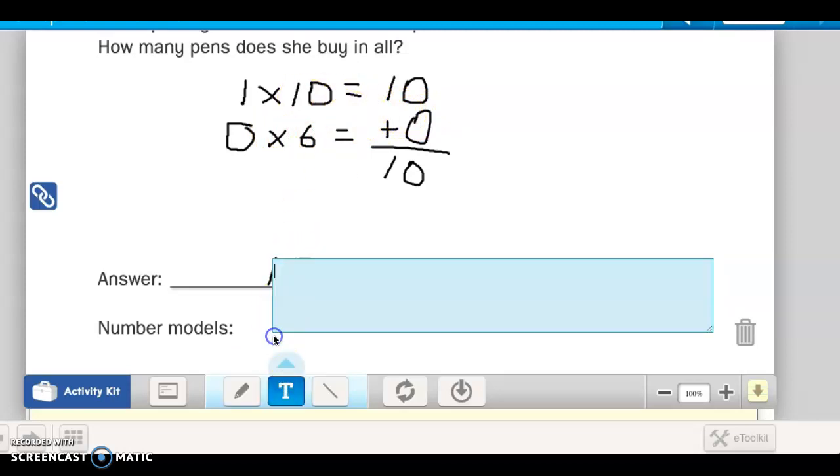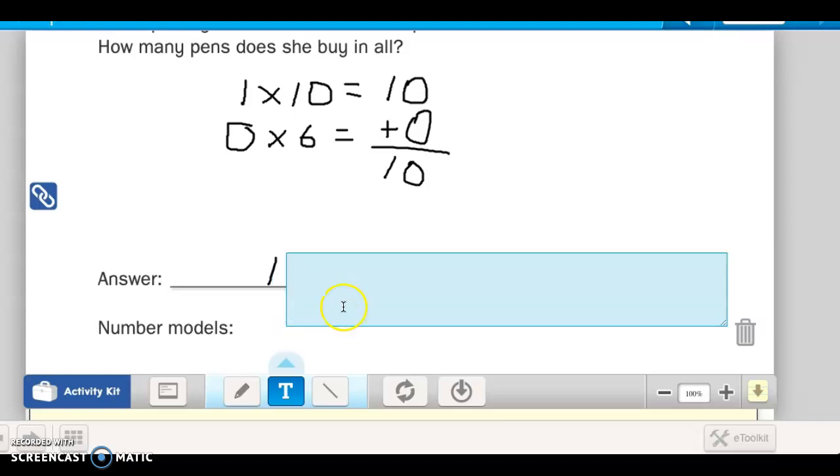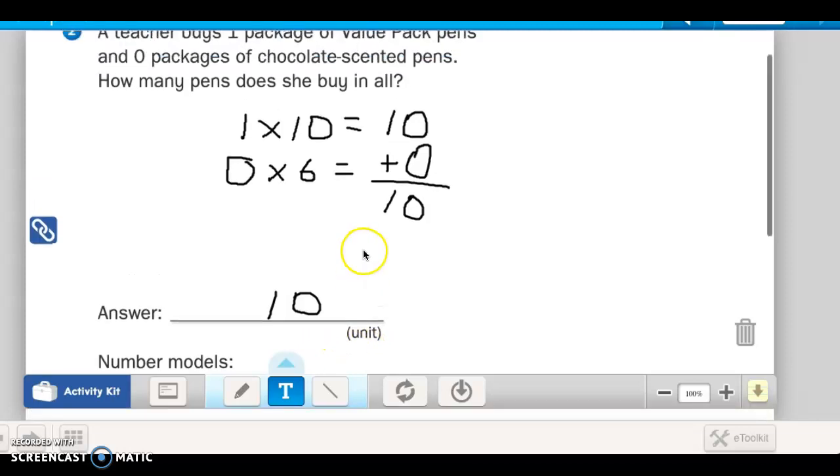So you should be writing those down here. So you would type in here at the bottom. You're going to write one times ten equals ten, zero times six equals zero, and then add ten plus zero equals ten. And how many pens? Ten, for ten pens in all.